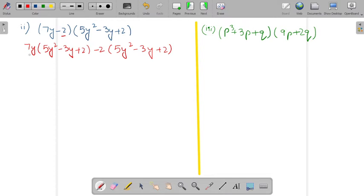7y with first term, 7y with second term, 7y with third. And same thing for the second term also. So after multiplying it,